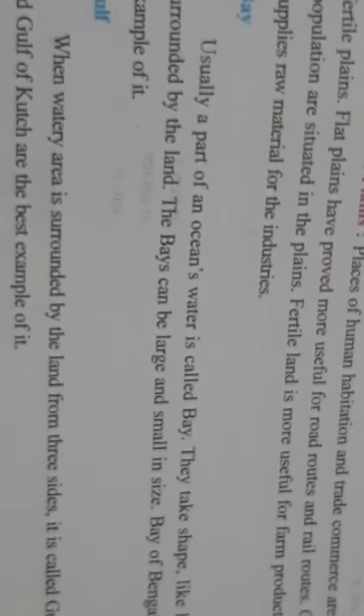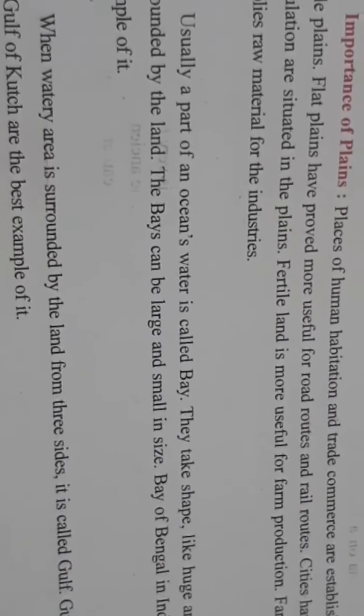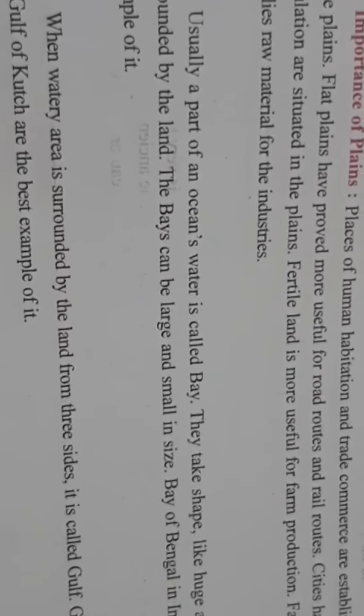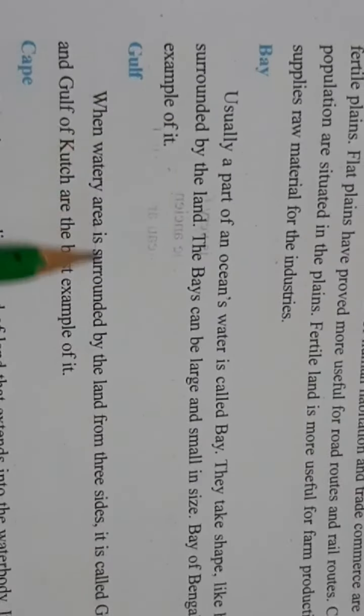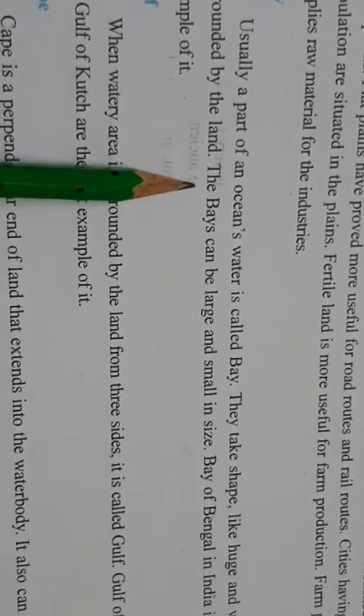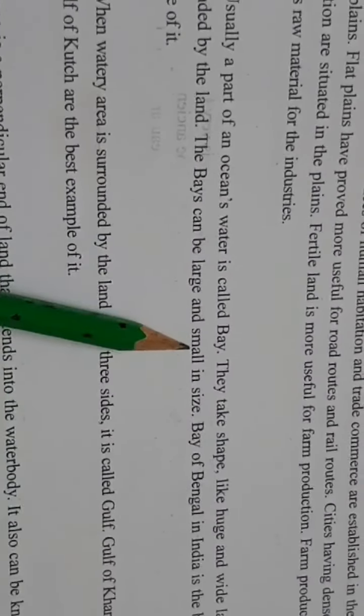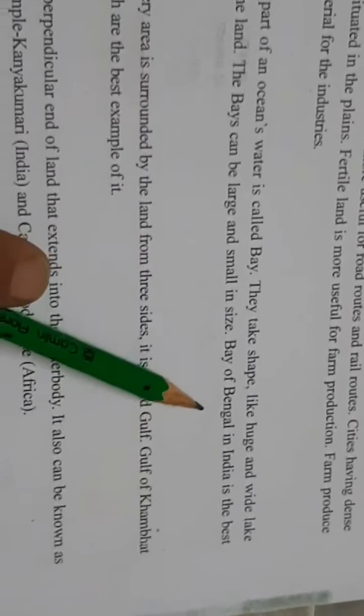Yani jho area — ocean ka ek hissa hota hai, ocean ka jo pani aata hai, uska ek hissa hota hai — usko bay bolte hai. Aur woh ek huge aur wide lake, yani ek talab ka shape le leta hai, aur uske ajubaju mein land hota hai. Usko bay bolte hai. Aur jo bays hoti hai, woh bade bhi ho sakte hai aur chhote bhi ho sakte hai. Aur uska best example hai Bay of Bengal in India.